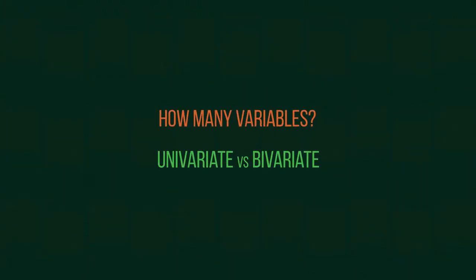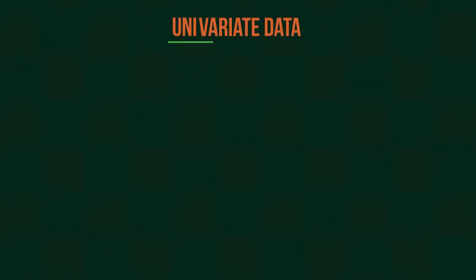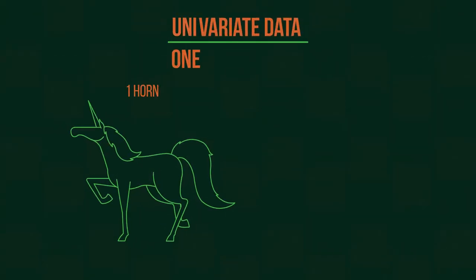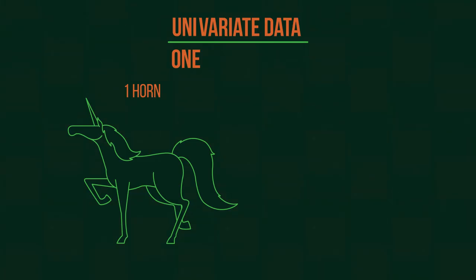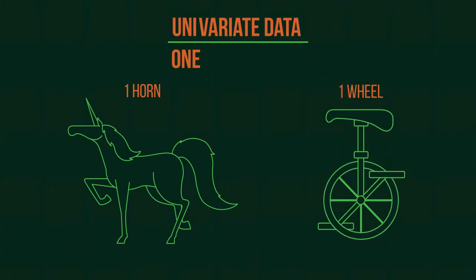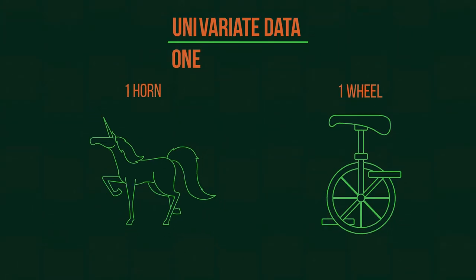Our final thing to discover is what is the difference between univariate and bivariate data. Univariate data. The prefix uni means one, like a unicorn with one horn and a unicycle with one wheel. So univariate data is data with one variable.